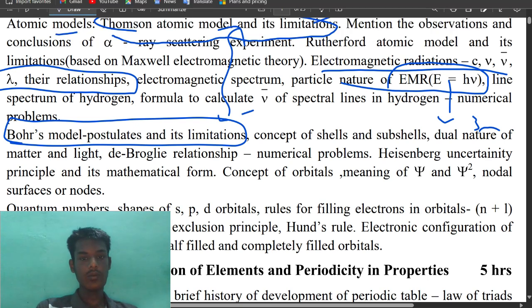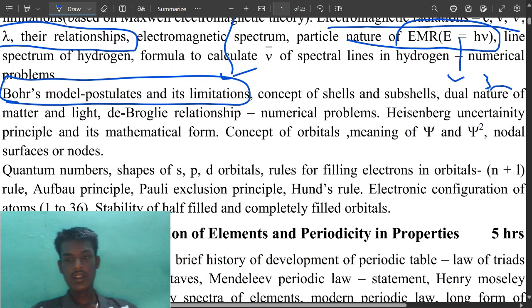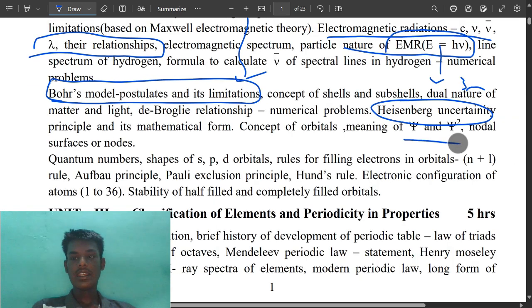Pauli exclusion principle, very very important. What is meant by nodal plane? The free space of electron is called nodal plane. We have to study the quantum numbers, shapes, s p d orbitals, shapes. They have three marks.